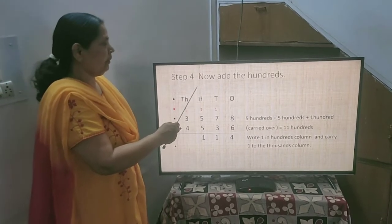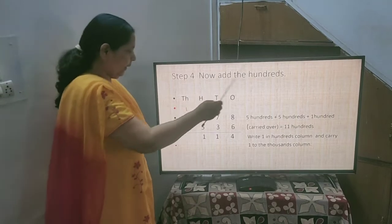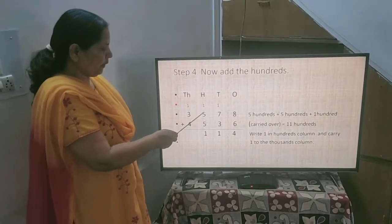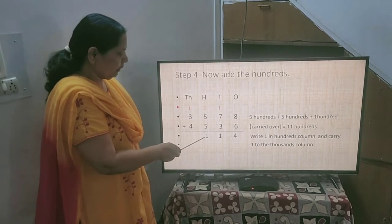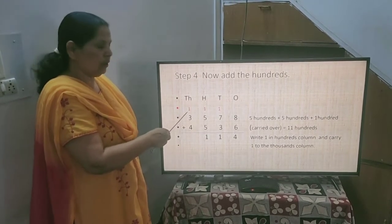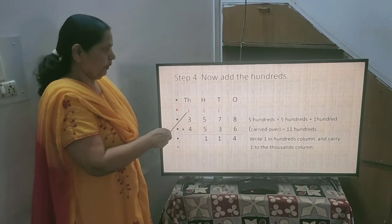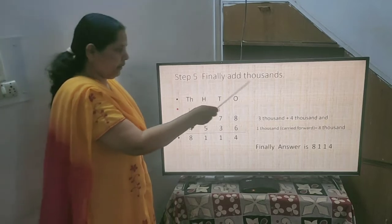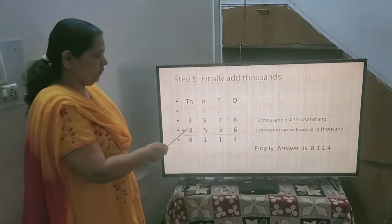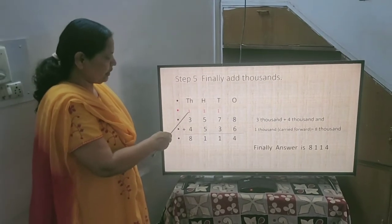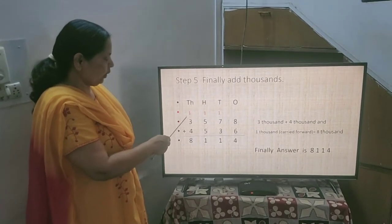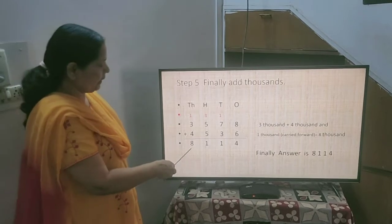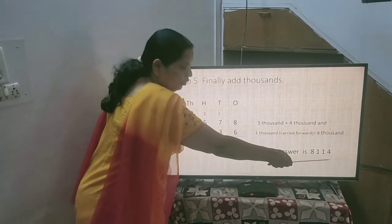Now step 4, add the 100s. Here you have 5, 5 and 1. 5 plus 5, 10 plus 1 comes to 11. This one you will write here and the other one will go to 1000s. After this you have to add the next step, add 1000s. Here you have 3, 4 and 1 which is carried. 3 plus 4 is 7 plus 1 comes to 8. And here you are getting final answer as 8,114.